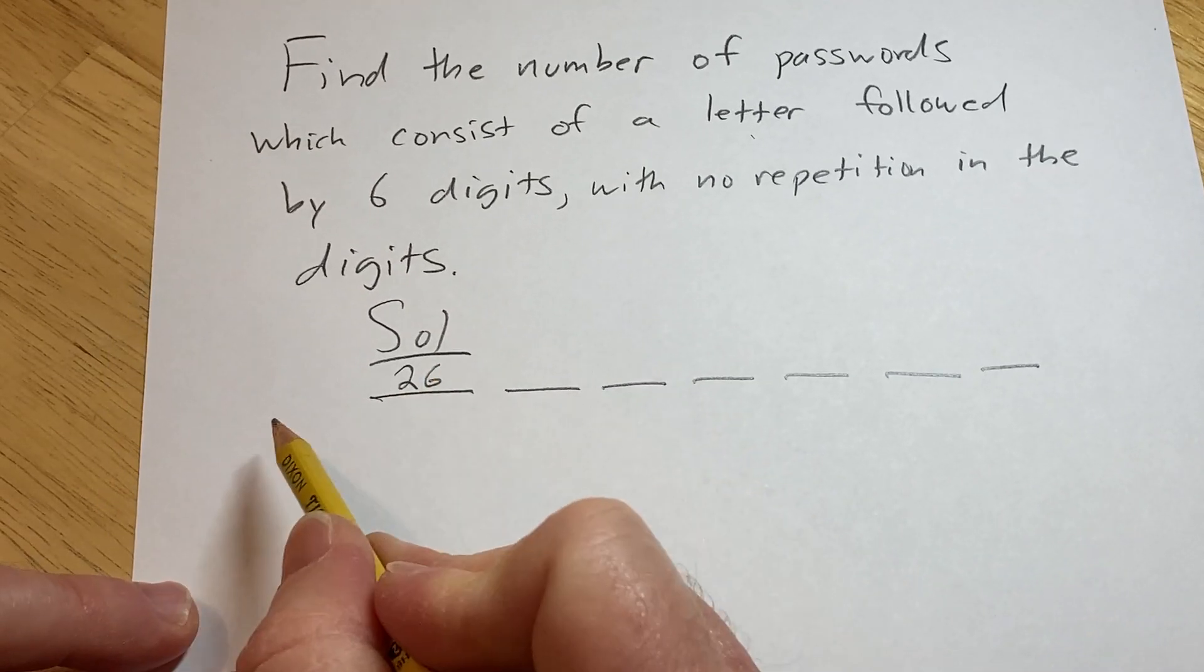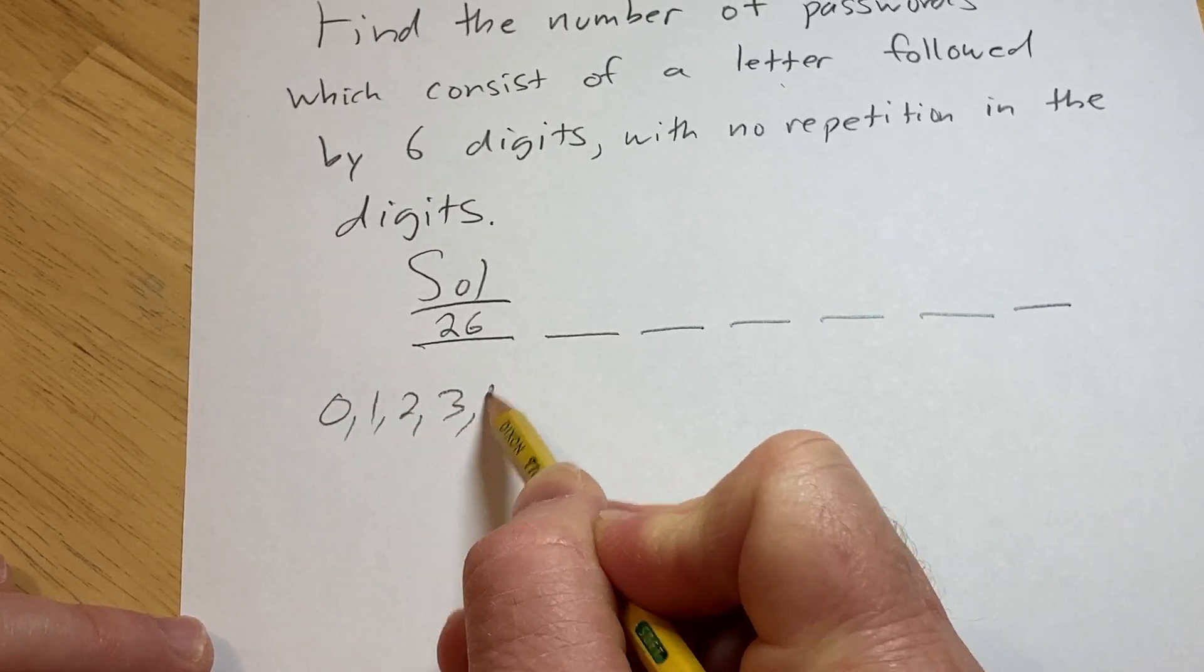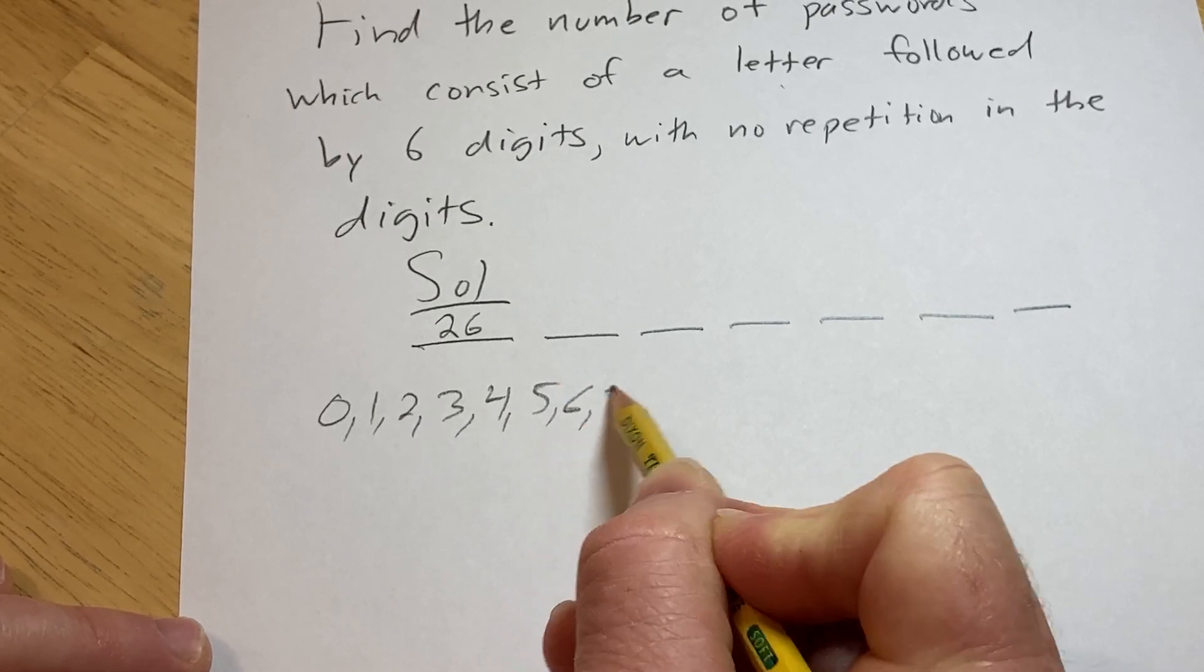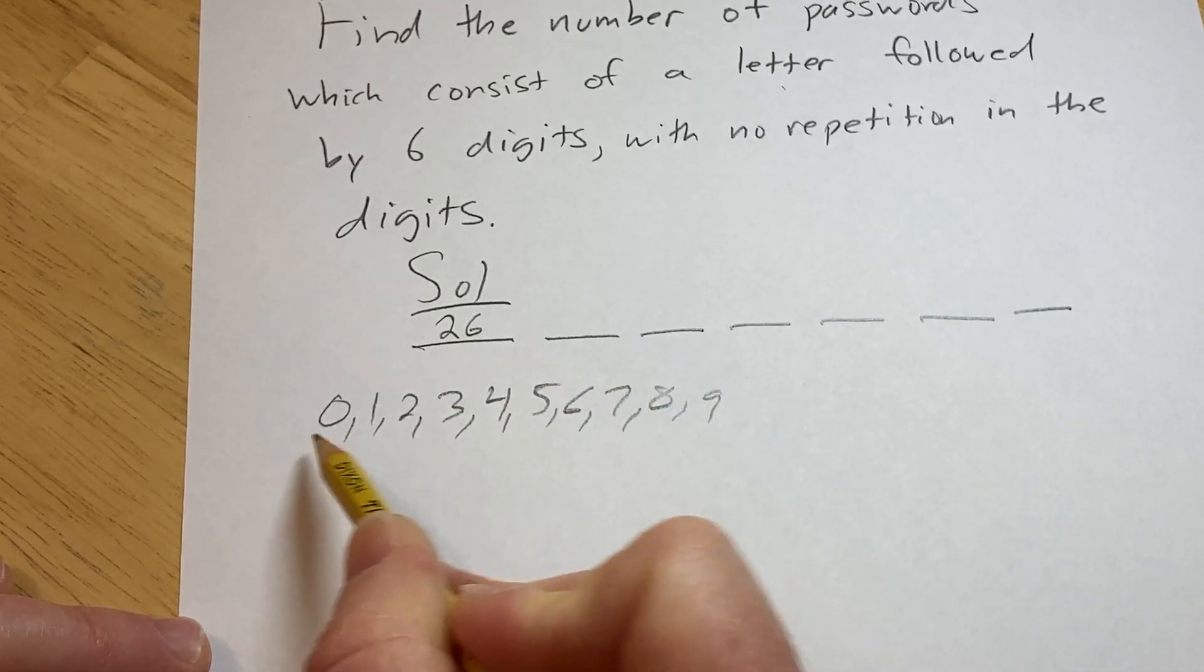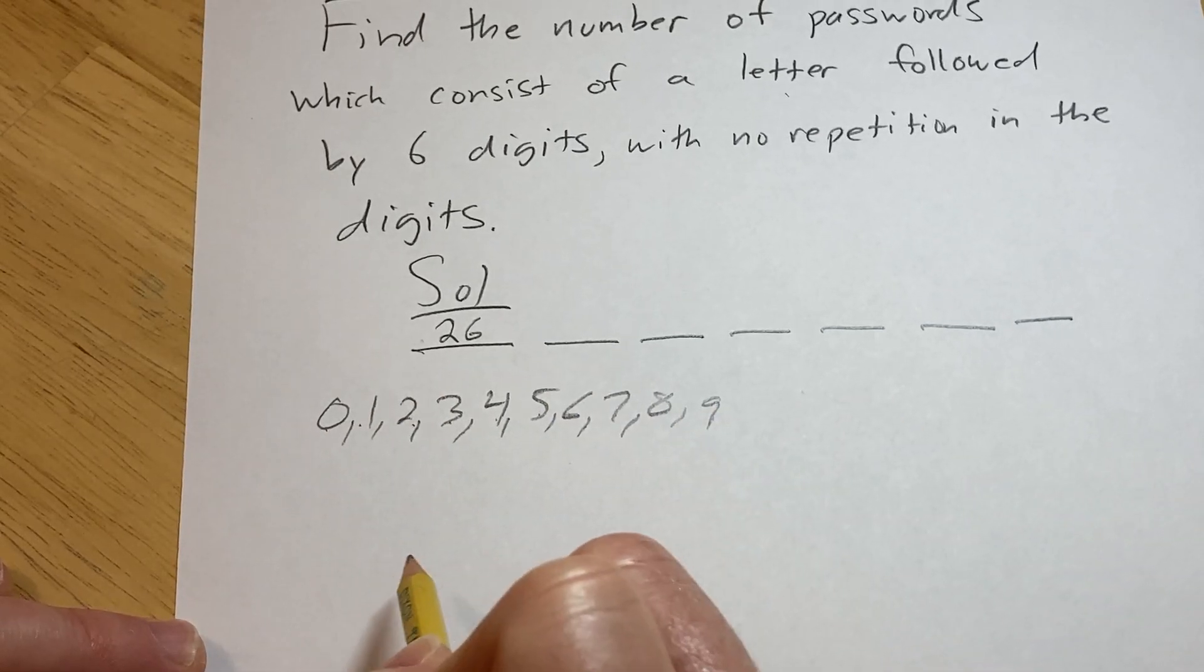As for digits, note there are 10 digits to choose from. We've got 0, 1, 2, 3, 4, 5, 6, 7, 8, and 9. So if you count these you do get 10. So 10 possibilities.